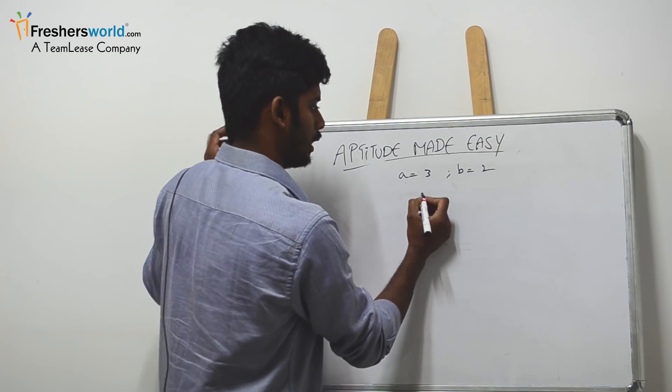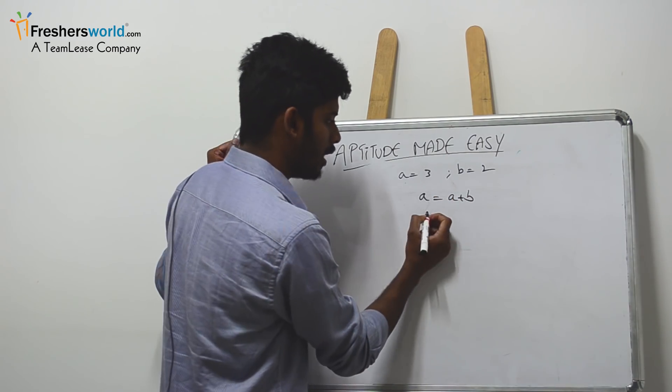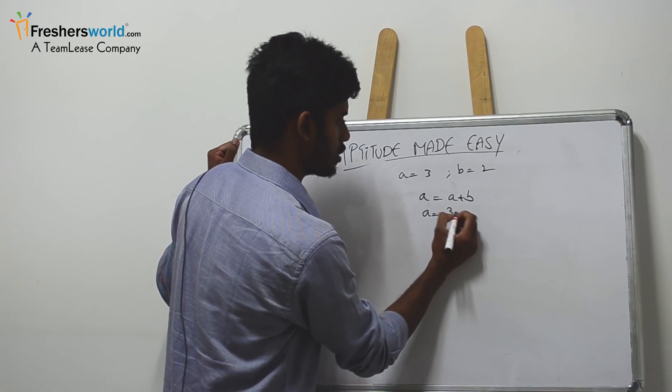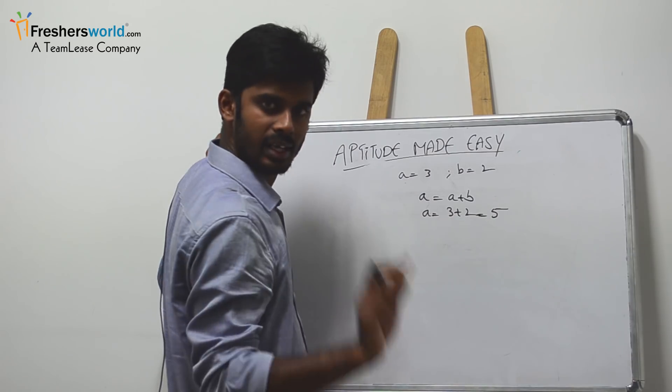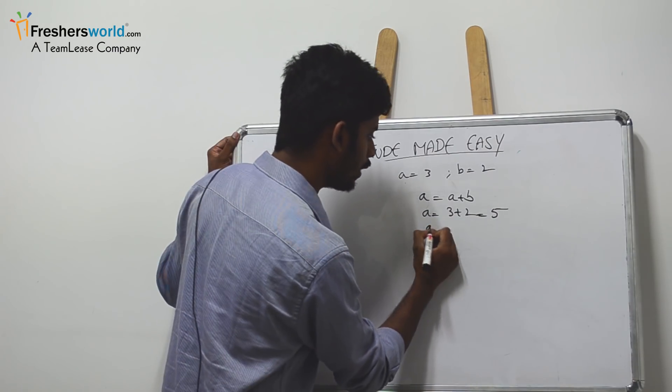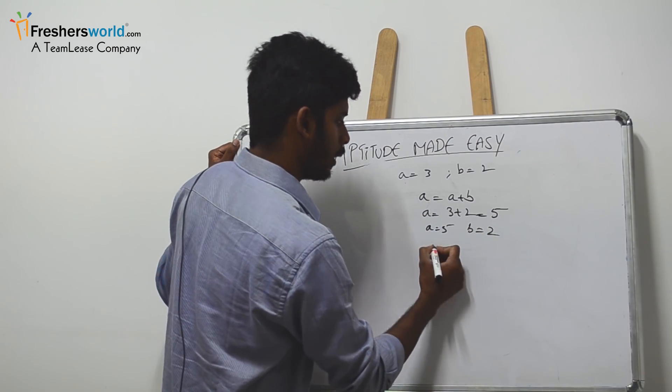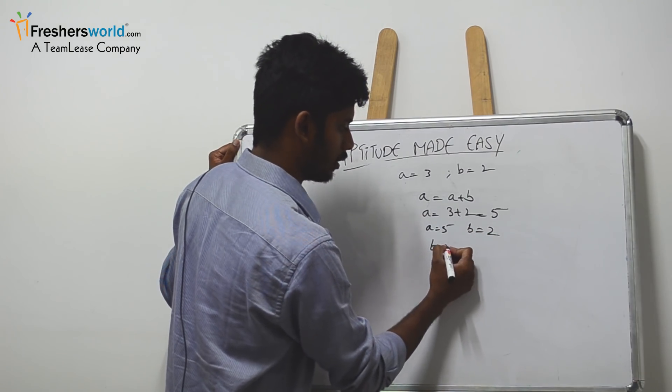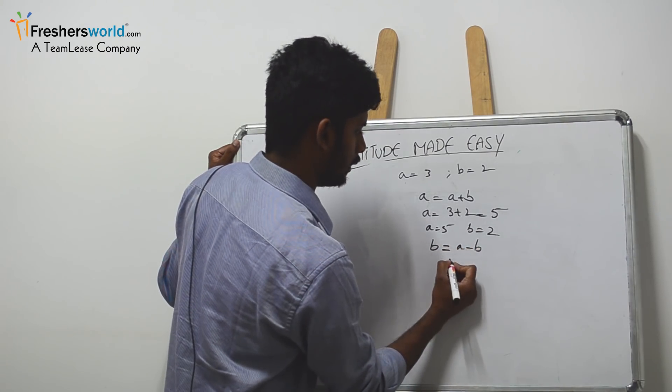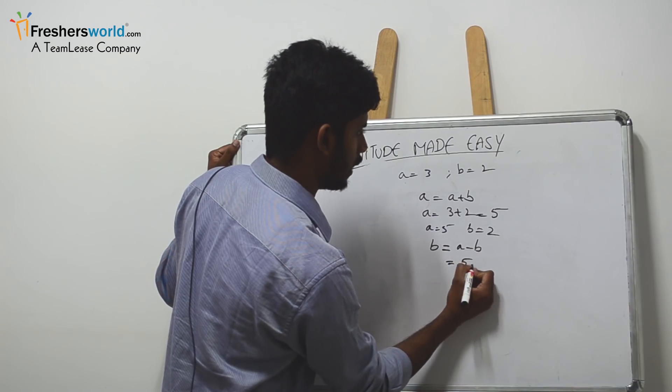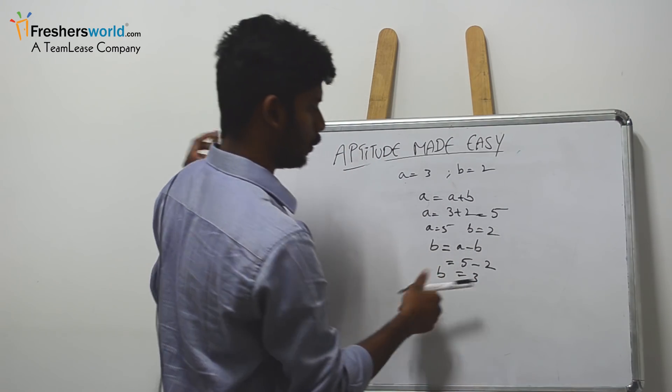I will write a = a + b first. Then a value will convert to 3 + 2, which means a value is now 5. So now a value is 5 and b value is 2. Now I will write the command b = a - b. Then b value will become 5 - 2, which equals 3. So b value is now 3.